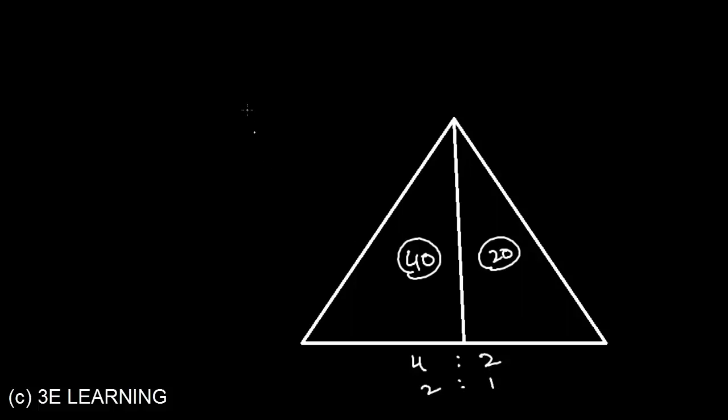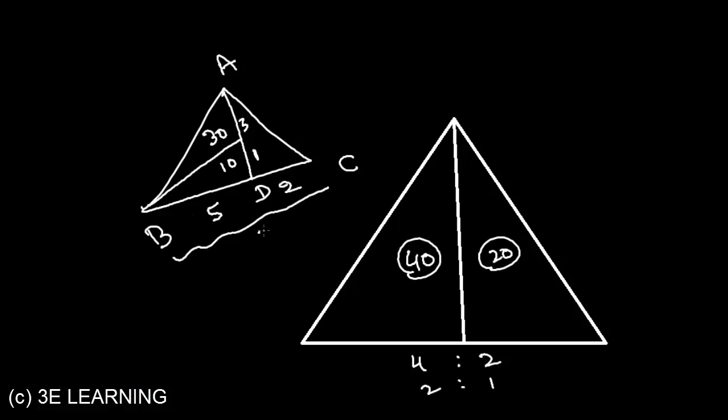Or we can say if we have a triangle ABC with lines like this, if this area is 30 and this area is 10, we can say the area is 3 to 1. I hope this one is clear. Now if I say take the point D, BD is 5, DC is 2, we can say BC is 7. And we know for the base 5, the area is 40, that means 8 times. So for base 7, our area should be 8 times, that is 56. So the area of triangle is 56.